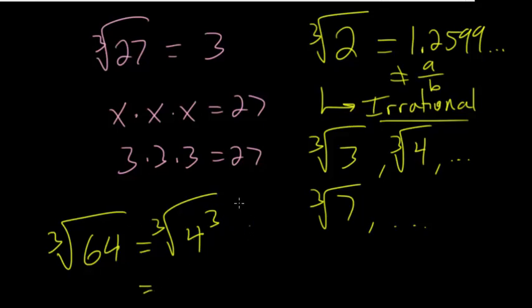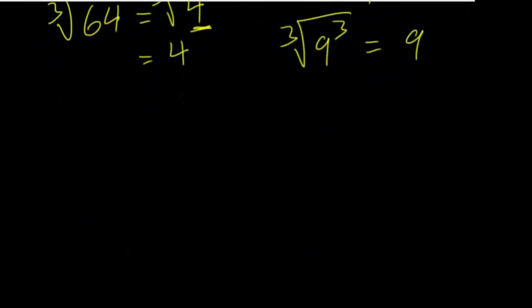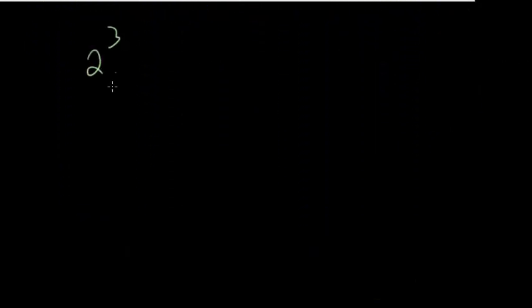We know that 4 times 4 times 4 would be 64, since 4 times 4 is 16, and 16 times 4 is 64. In essence, the cube root would cancel out with some number cubed, so these two cancel and you just get whatever the base is. For example, if you had the cube root of 9 cubed, then the cube root and the cube cancel out, and you just get 9.